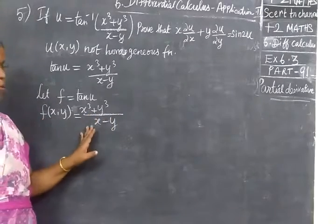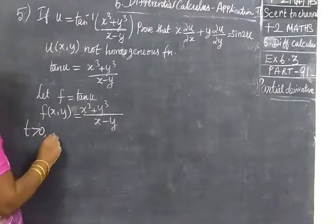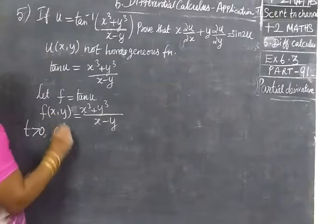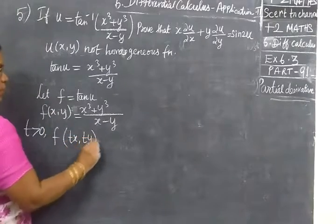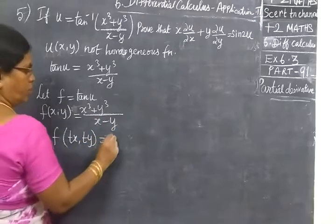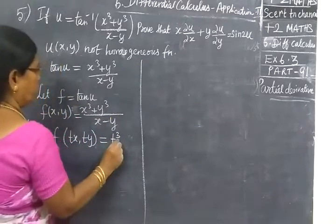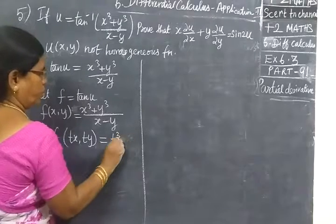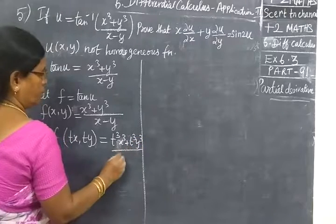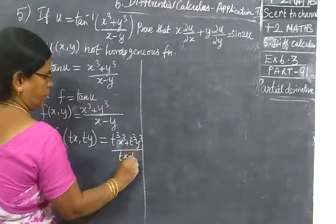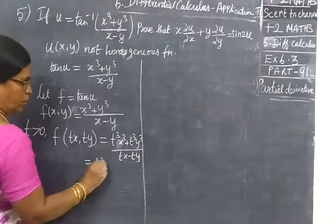For t greater than 0, we multiply x by t, then y also by t. Otherwise, another side u, so you are getting t cube, t cube x cube plus t cube y cube by tx minus ty.